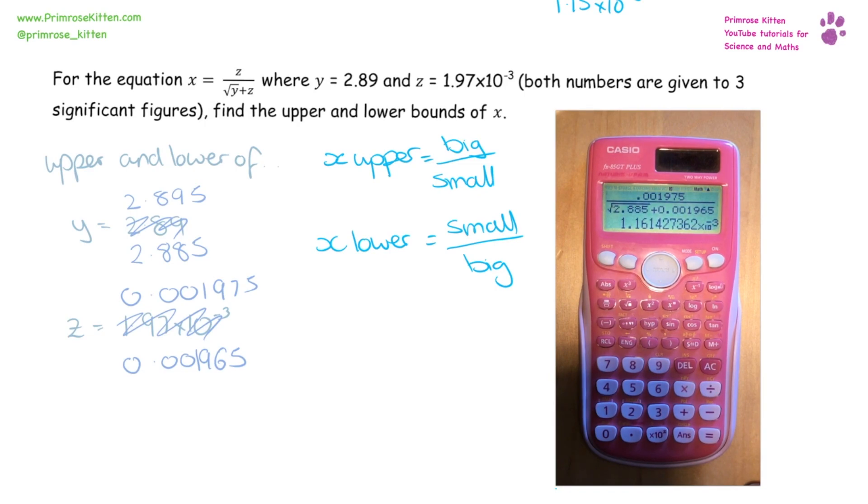We can see that our answer for the upper bounds is 1.16 times 10 to the minus three.